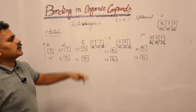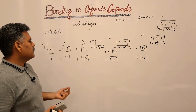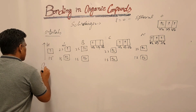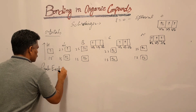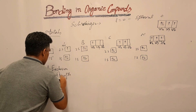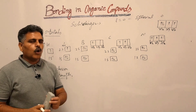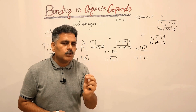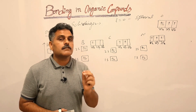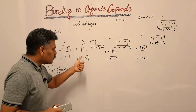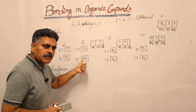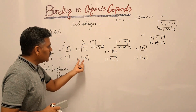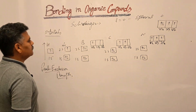When we distribute electrons in orbitals, no two electrons in an orbital — whether 1s or 2s — can have the same value of all quantum numbers. This is the Pauli exclusion principle. In an orbital, the two electrons must have opposite spin, meaning they have different values of the spin quantum number.